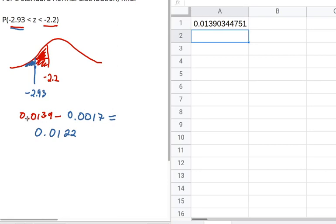And see, it matches what I found on the table, 0.0139, 0.0139, with some more decimal places of accuracy here.